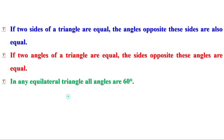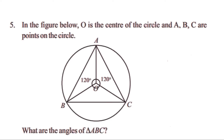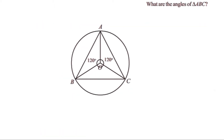Now let us check the answer of the homework. In the figure below, O is the center of the circle and A, B, C are points on the circle. What are the angles of triangle ABC? Consider triangle AOC. OA and OC are radii of this circle, so they are equal. That means triangle AOC is an isosceles triangle and these two sides are equal.